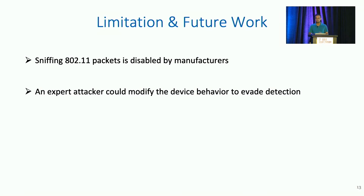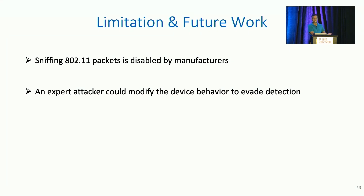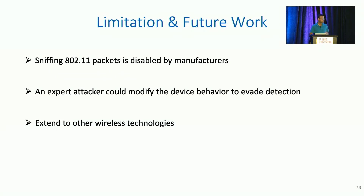An expert attacker could also modify the device behavior to evade detection — for example, hacking the firmware to change the transmission behavior or just storing the data locally. That said, the majority of everyday attackers don't have sufficient expertise to hack the firmware. Future work in this space can also include building similar systems for other wireless technologies such as Zigbee, Bluetooth, or even 5G.